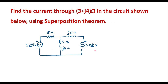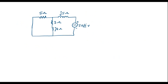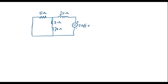Now let me consider the 50 volt source alone by short circuiting the 5∠90 source. Then again we will find the current through 3+j4, which I will call I2. Here I consider only this source, with the other voltage source shorted. Let me call the current through this I2.